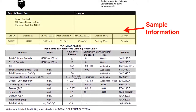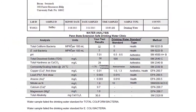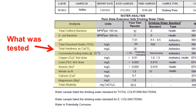The top of the report contains the sample information, including your contact information, the lab ID number for your sample, the dates and times the sample was collected, and the county where the water supply is located. The sample type designates this as a drinking water sample. The first column provides the analysis, which lists the various water parameters that you asked the lab to test in your water.